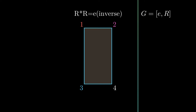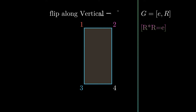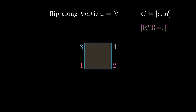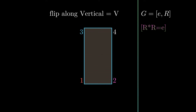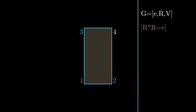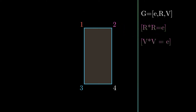Let me note down that property. Now let's flip the rectangle along the vertical axis and call it big V, and add that element into G. Now G has three elements: E, R, and V. If we keep flipping along vertically, we can easily see that V star V also gives the original element E.